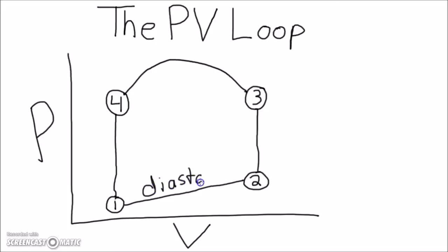Starting from 1, the mitral valve opens to allow diastolic filling. You can see volume is increasing.